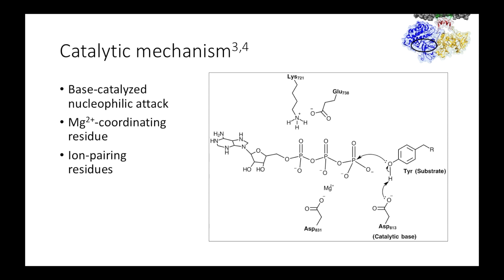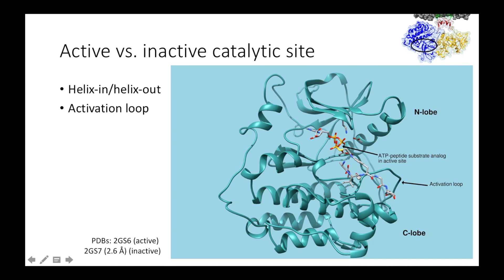Before we look at the active site, I need to briefly describe the proposed catalytic mechanism of tyrosine kinases. ATP is the primary substrate of the kinase. First, ATP binds deep in the active site, and then the tyrosine residue on the target protein performs a base-catalyzed nucleophilic attack. When ATP binds, aspartate-831 of the kinase coordinates the associated magnesium ions, stabilizing ATP's binding. At the same time, an ion-pairing interaction between lysine-721 and glutamate-738 stabilizes the charged side chains, so that lysine can hydrogen bond with the alpha-phosphate of ATP. Finally, aspartate-813 acts as the catalytic base that deprotonates the substrate tyrosine hydroxyl group, allowing it to attack the gamma-phosphate.